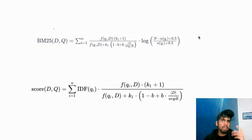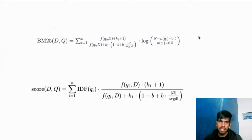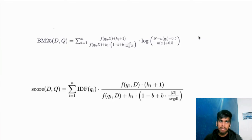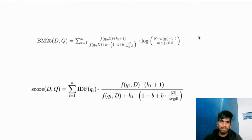Now, what do we mean by keyword retriever? Let's understand it in detail with a few examples. We have an algorithm named BM25. BM25 is a ranking algorithm that is used for information retrieval, such as search engines.